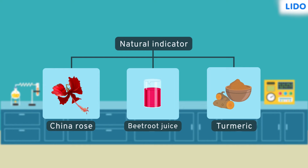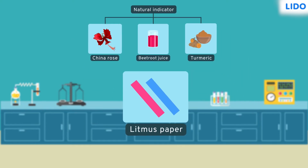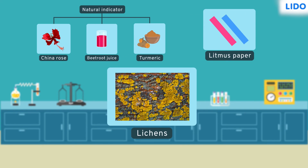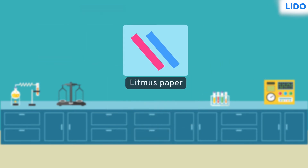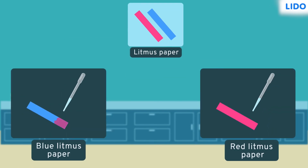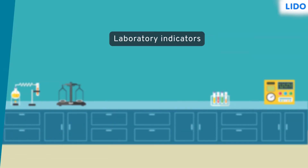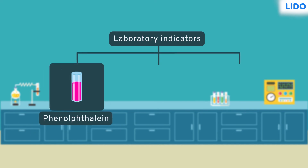Hence, various indicators are specially prepared for laboratory use. Litmus paper is one of the most commonly used indicators in the labs. Litmus indicator is extracted from organisms called lichens. Litmus indicator is available in the form of a solution and paper. There are two types of litmus papers: red litmus and blue litmus. Blue litmus paper turns red in the presence of acids and red litmus paper turns blue in the presence of bases.